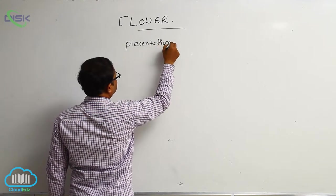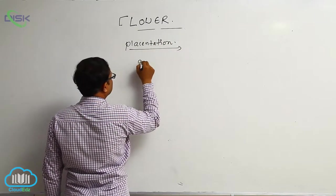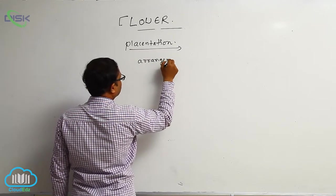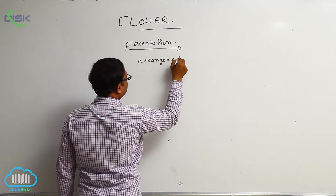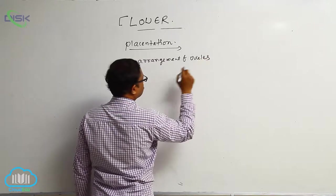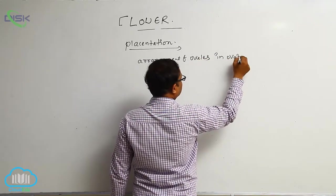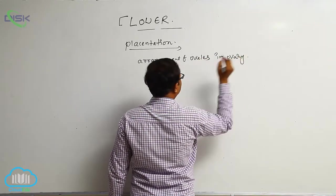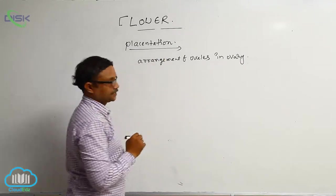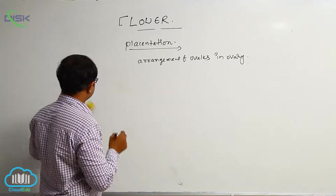Placentation means the arrangement of ovules in the ovary. Placentations are generally of different types.